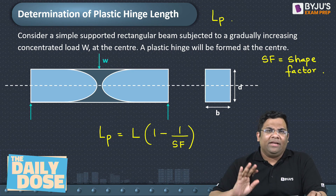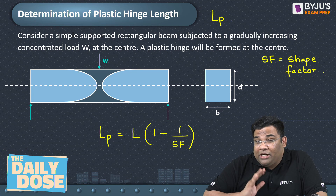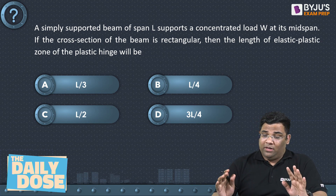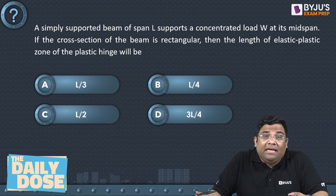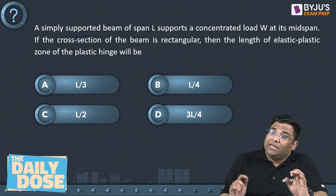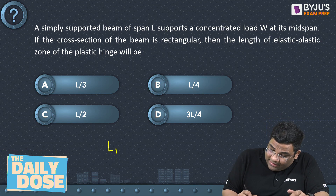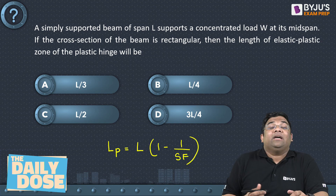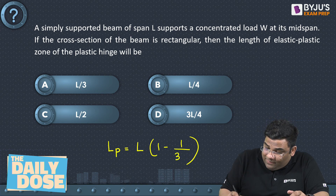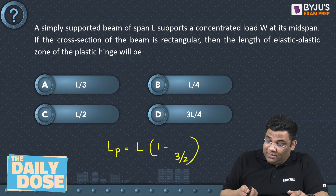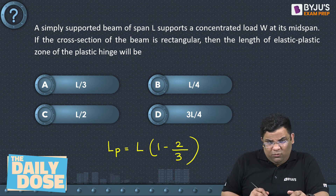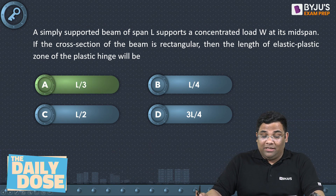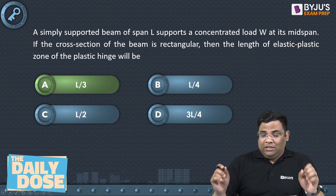Let's solve a basic question. For a simply supported beam with a point load at mid-span and a rectangular cross-section, what is the length of the elasto-plastic zone, i.e., the length of the plastic hinge? Using the formula: L × (1 − 1/shape factor). The shape factor for a rectangular beam is 1.5, or 3/2. So 1 − 1/(3/2) = 1 − 2/3 = 1/3. Therefore the length of the plastic hinge is L/3. The correct answer is option A.